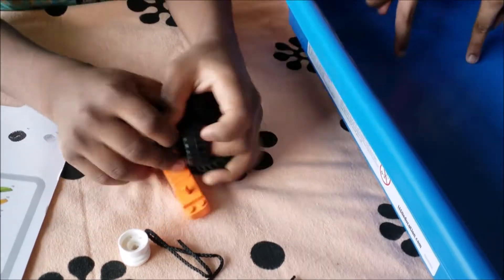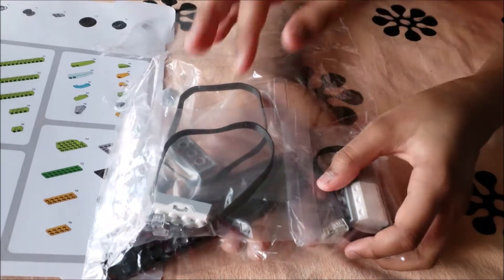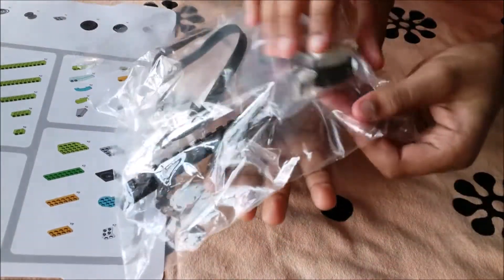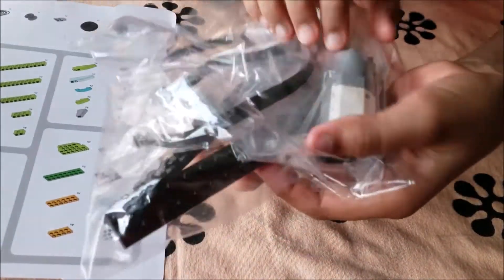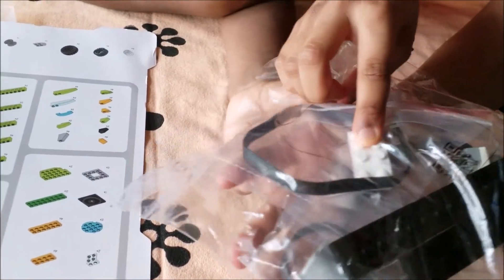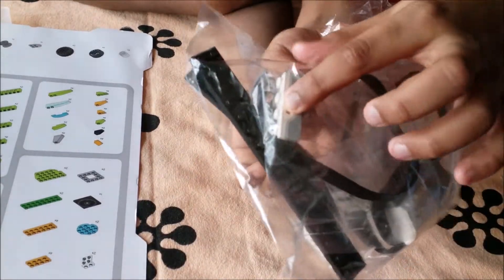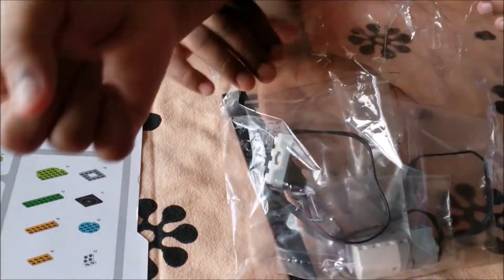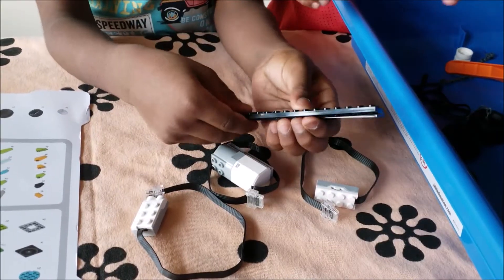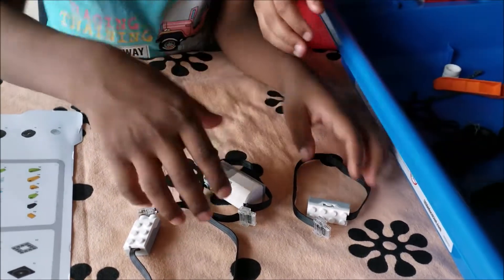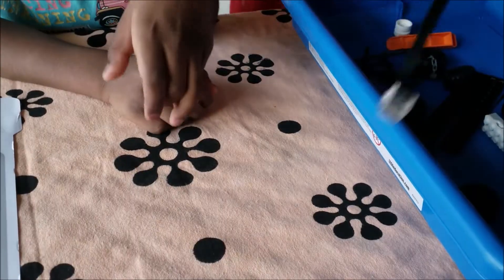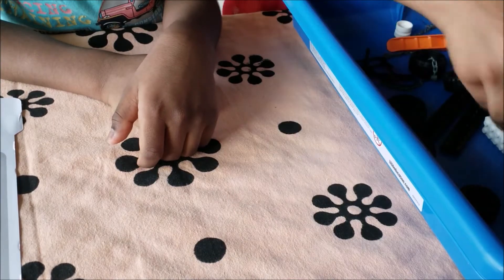In this set there are motors and sensors and one LEGO piece. This is the motor, and these are the two sensors. This is one sensor, and next is the second sensor. Let's open this up. We have to open these sensors and put these two LEGO pieces over here. We also have to put the motor and sensor.